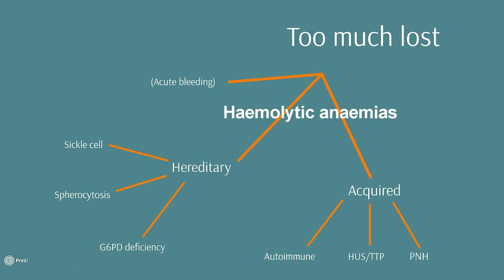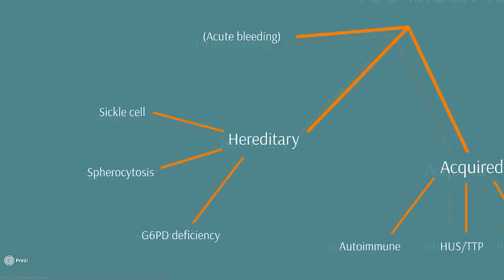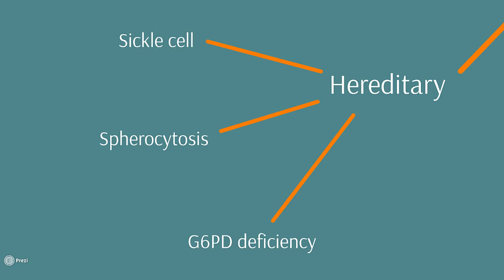For the time being we're going to break down our hemolytic anemias into hereditary diseases which are passed down through families and acquired diseases which are just developed by an individual themselves during their lifetime. There are lots of different types of hereditary hemolytic anemias and we're just going to talk about the most common ones here.